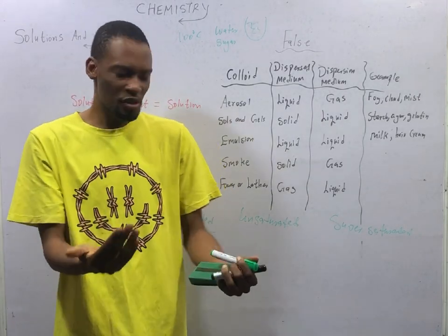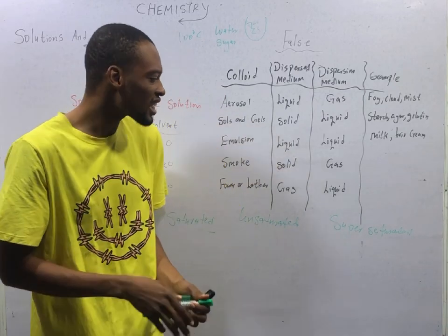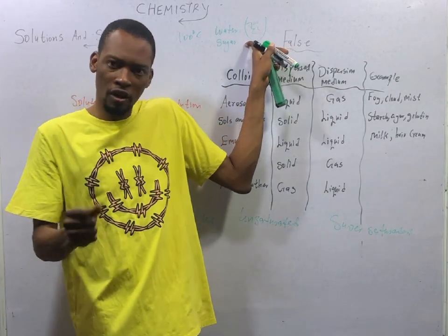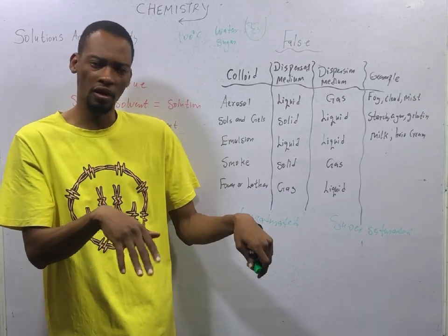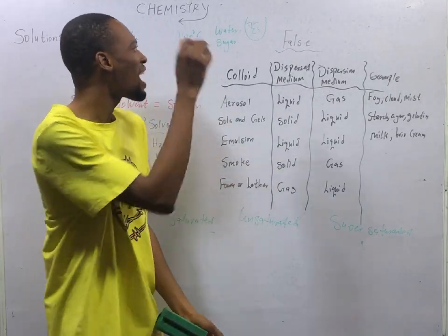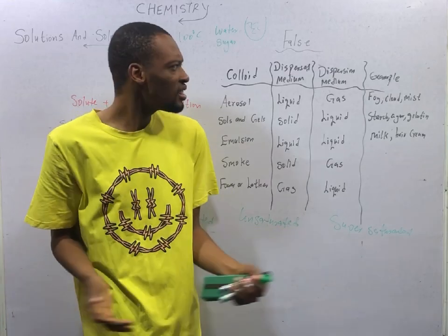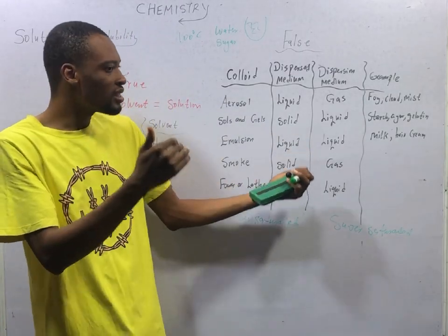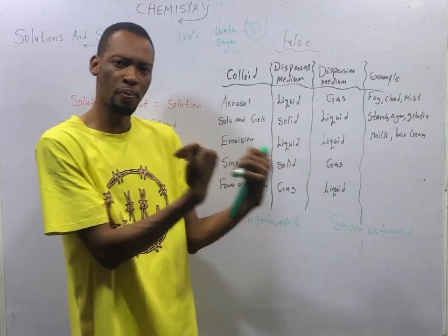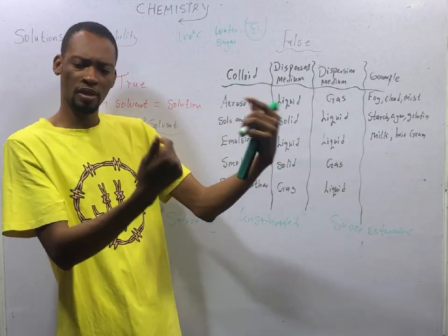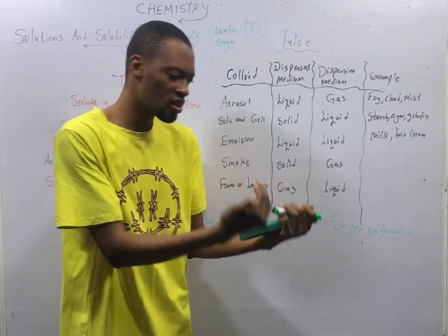When a solvent contains less solute than it can dissolve at that temperature, it is said to be unsaturated — meaning if you pour more salt in, it will still dissolve. Temperature affects solubility: for solids and liquids, generally, solubility increases with temperature. For gases, generally, as temperature increases, solubility will drop — except for HCl. So for gases, increasing temperature reduces solubility.